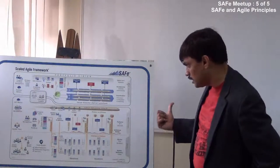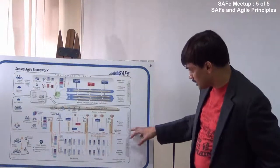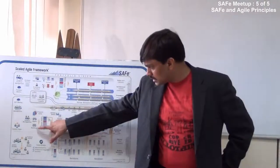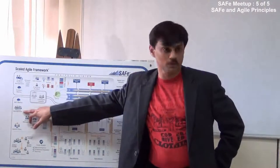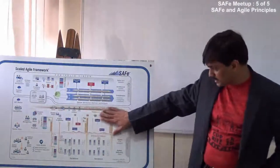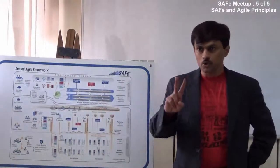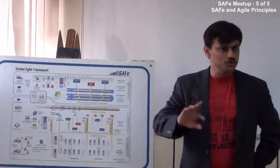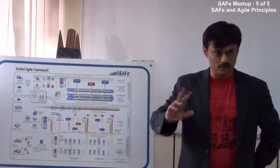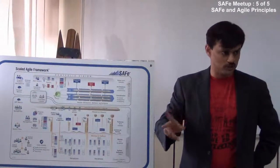Again this also focuses on scrum of scrum. You will find somewhere scrum of scrum written here. So even this release planning, release management, it includes scrum of scrum. So in SAFe we have two scrum of scrums in a week. So usually Wednesday and Friday we do scrum of scrums.